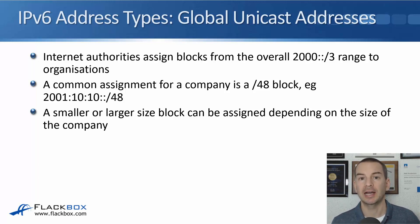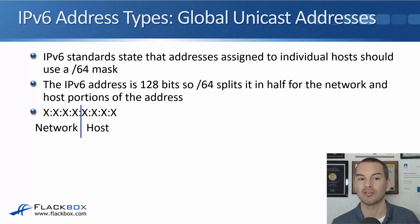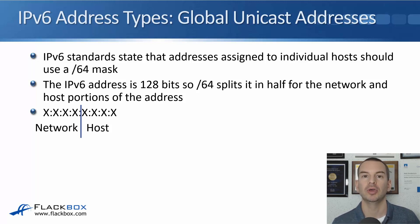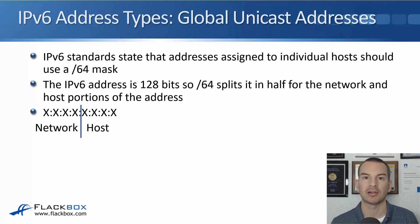If you're using IPv6 at home, just yourself individually, you'll be given a /64 which will typically be assigned by DHCP. The reason an individual is assigned a /64 is that the IPv6 standards state that addresses assigned to individual hosts should use a /64 mask. That doesn't just apply at home — every organization everywhere, even when using a large block of addresses, every individual host should use a /64. It's not like IPv4 where we use a /24, /16, or /30 on point-to-point links. Everywhere, we're expected to use a /64.